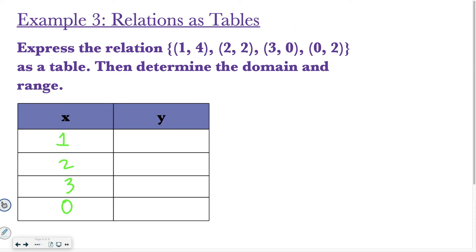Then for the y, I write it in the same order. So I'd write 4, 2, 0, and then 2. That's all you have to do to express it as a table. You break it up into two columns just like that.